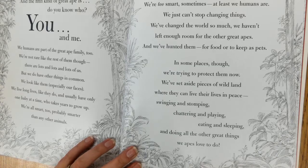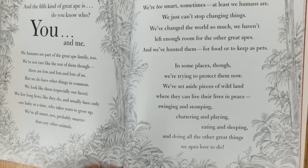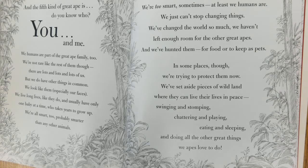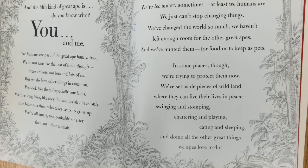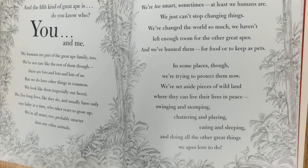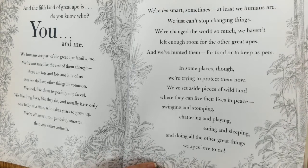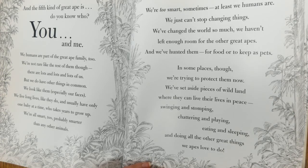And the fifth kind of great ape is — do you know who? You and me. We humans are part of the great ape family, too. We're not rare like the rest of them, though — there are lots and lots and lots of us, but we do have other things in common. We look like them, especially our faces. We live long lives like they do and usually have only one baby at a time, who takes years to grow up. We're all smart, too — probably smarter than any other animals. We're too smart sometimes. At least we humans are — we just can't stop changing things. We've changed the world so much, we haven't left enough room for the other great apes.